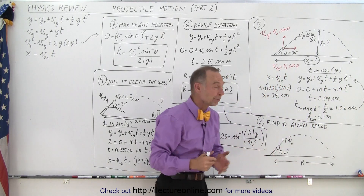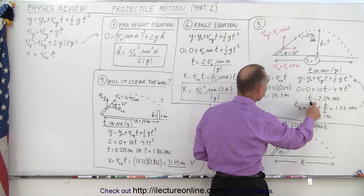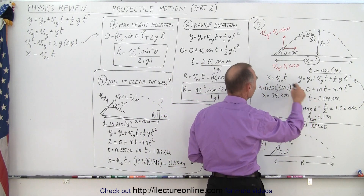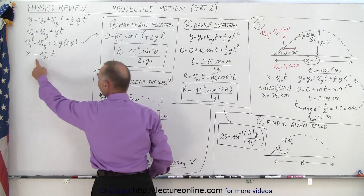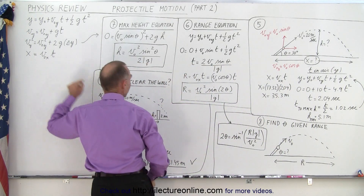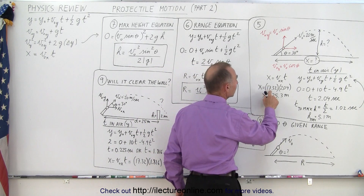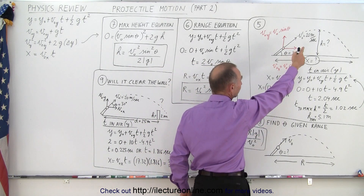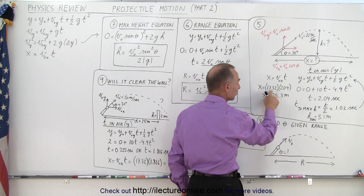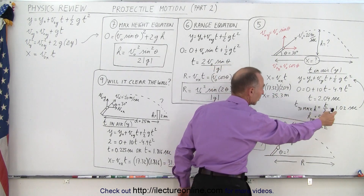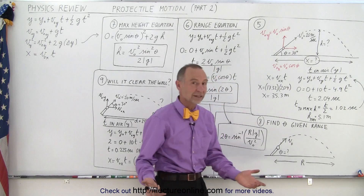Remember, g is negative 9.8. You solve for time, and then you plug that time into the equation that tells you distance equals velocity times time in the x-direction. So distance equals the velocity in the x-direction, which is 20 meters per second times the cosine of 30 degrees — 17.32 — times the time in the air, and that tells you how far the projectile went.